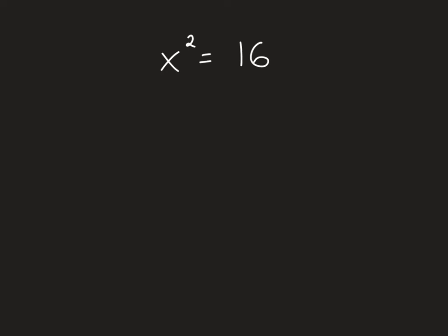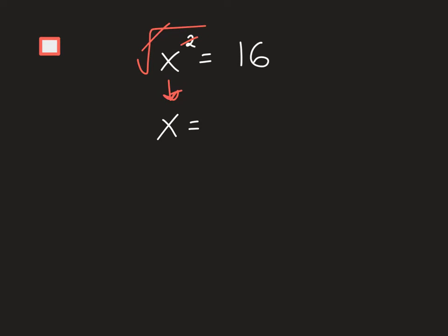Let's check out this equation: x squared equals 16. What we're really asking is what could I plug in for x to make this true — what squared equals 16? We can think about it algebraically: how would I get x alone by getting rid of that square? The reverse operation of squaring is taking the square root, which cancels the square, leaving just x. And if I take the square root of the left side, I have to take the square root of the right side too.